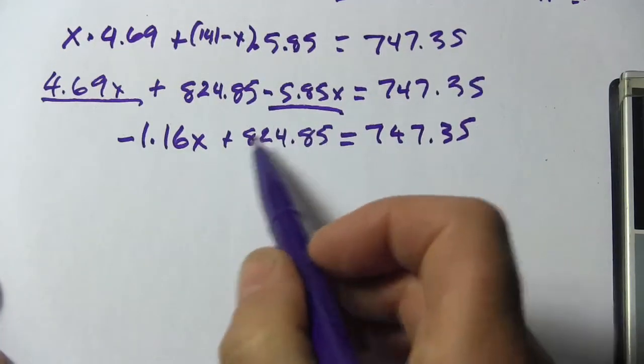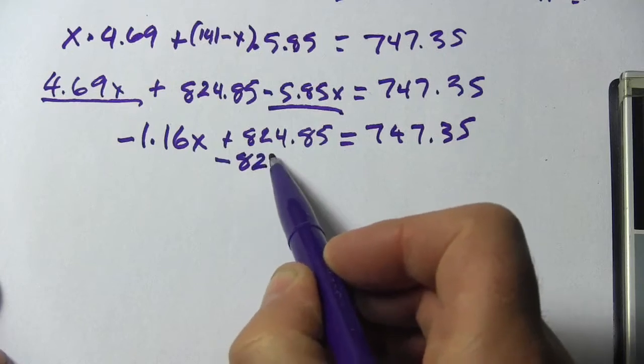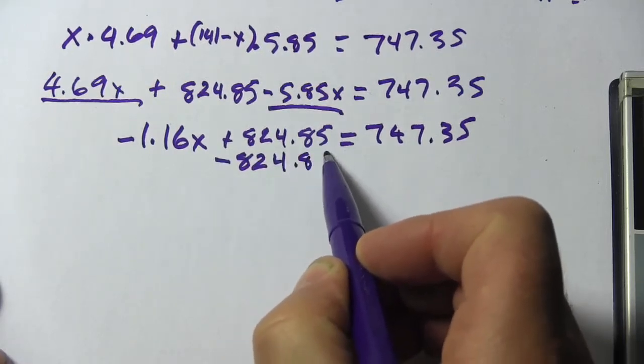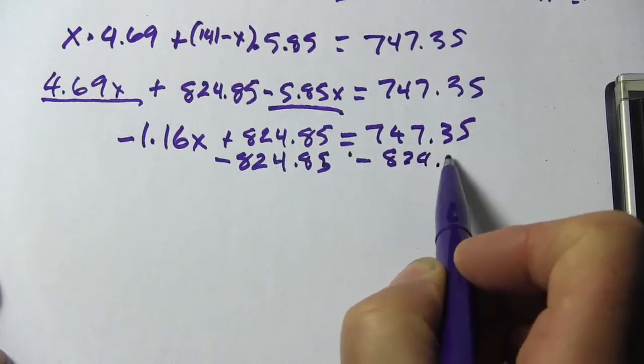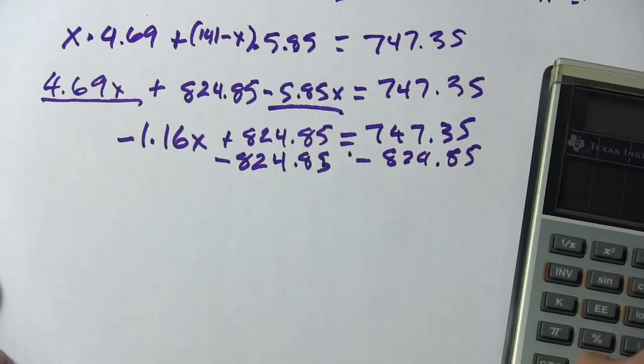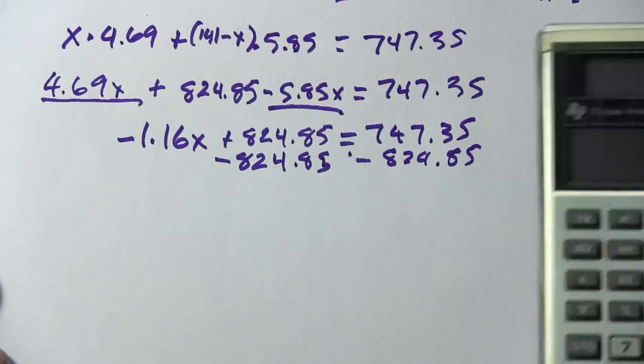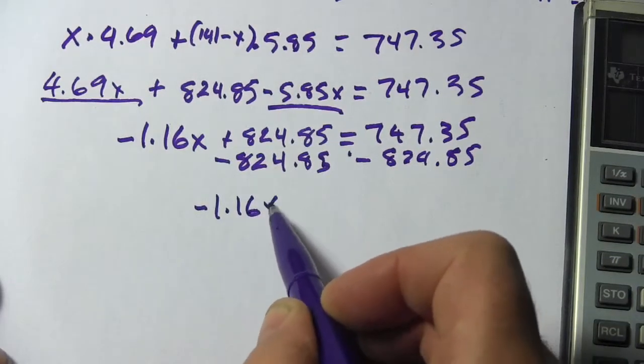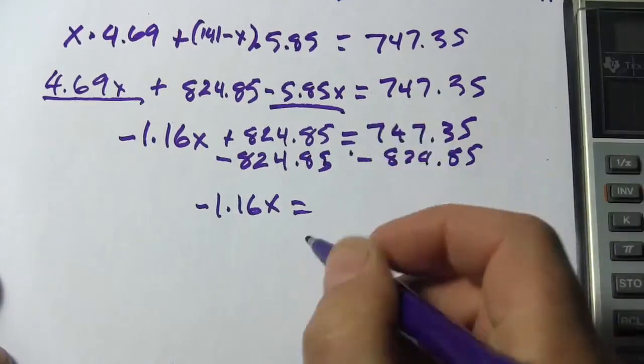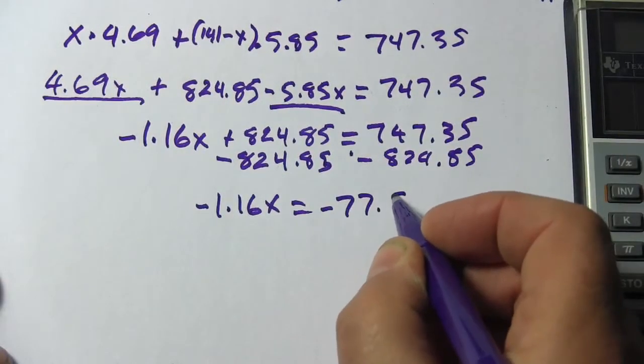Next, we're going to get the X term alone by getting rid of this 824. We're going to subtract that. So 747.35 minus 824.85, and that equals a negative 77.5. So we've got negative 1.16X equals a negative 77.5.